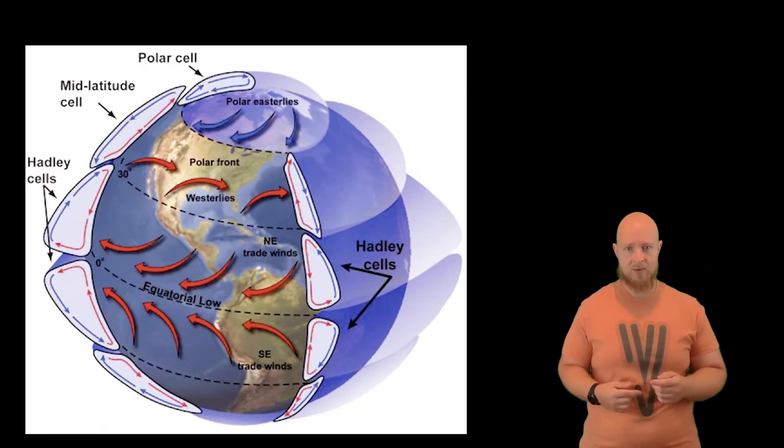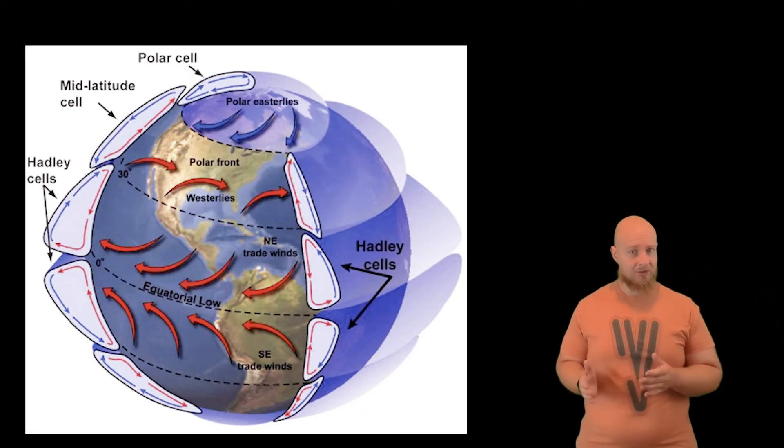But something here is missing. You may notice that the surface winds in our model move exclusively north and south. But on the diagram I showed in the beginning, that one, there are easterly and westerly winds. This change in direction is caused by the spinning of the earth and the resulting Coriolis force.